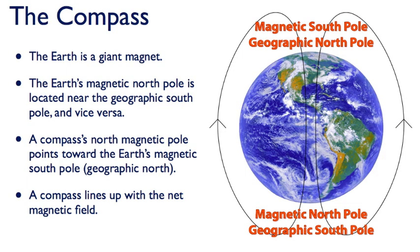Let's talk about compasses for just a minute. The Earth is a giant magnet, and the Earth's magnetic north pole is located near the geographic south pole, and vice versa. So a compass's north magnetic pole points toward the Earth's magnetic south pole, the geographic north. And a compass lines up with the net magnetic field. Now in actuality, the magnetic north and south pole of the Earth are constantly moving. The current rate of change of magnetic north is thought to be more than 20 kilometers per year. It is believed that the magnetic north pole has shifted more than 1,000 kilometers since it was first reached by explorer Sir John Ross back in 1831.